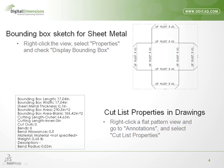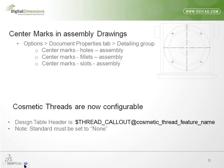The next item is center marks in assembly drawings. It used to be that you could only get center tick marks to show up on part files. Now we can actually bring center tick marks of holes created at the assembly level. So if you have a post-process operation — say you get a bolt in and want to drill a hole into it at the assembly level — we want the center tick mark to show up in there.